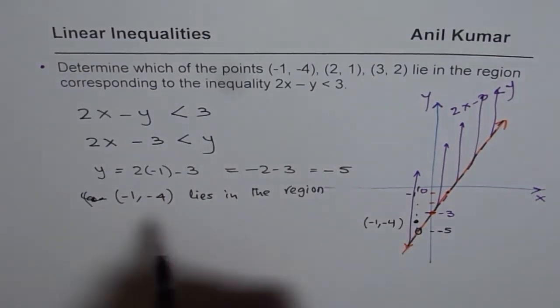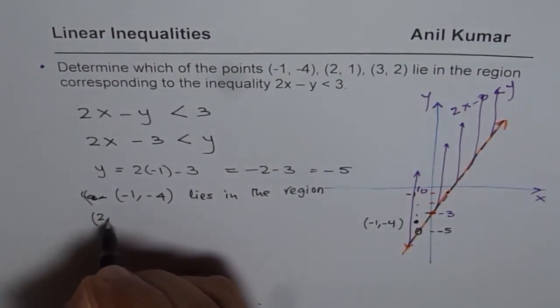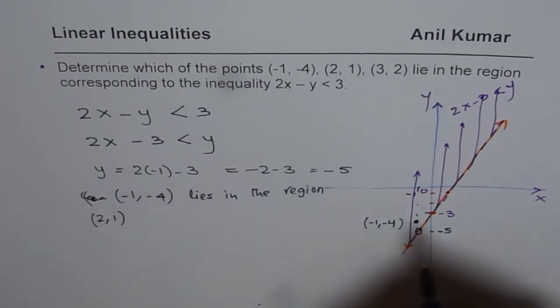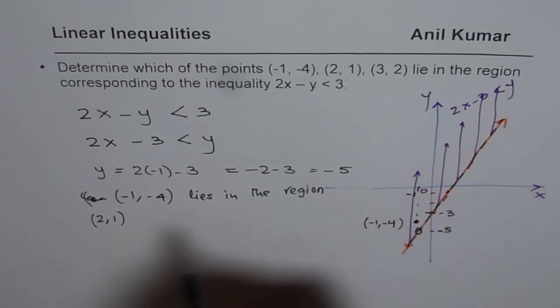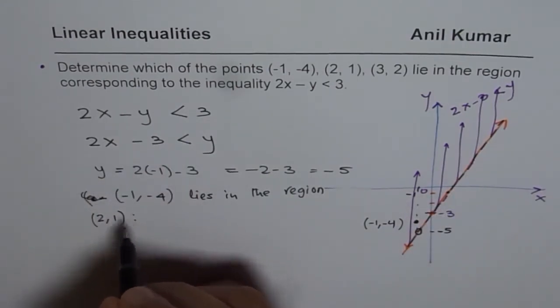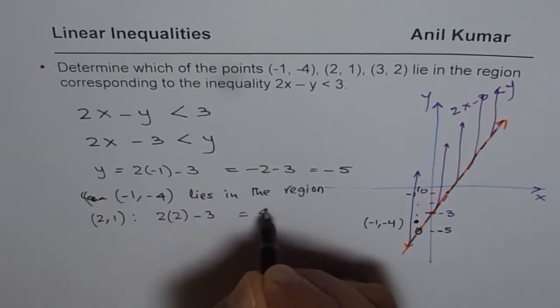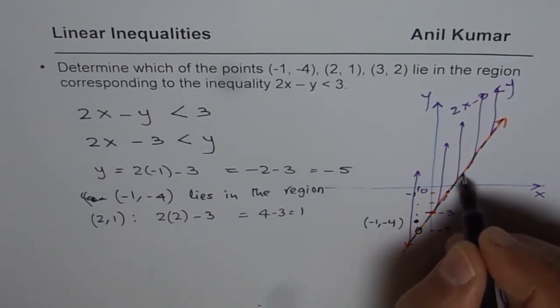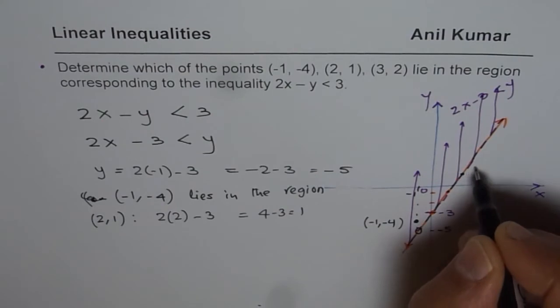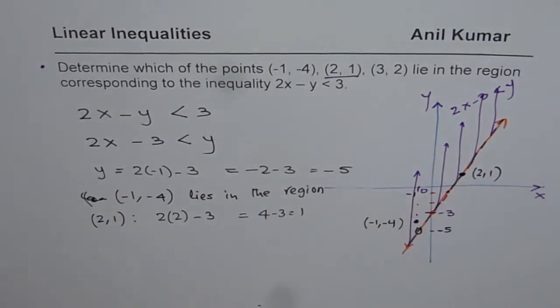Let us test the second point. The second point is (2, 1). So we have 2 and 1 as a point. At x = 2, what is the point on the line? Let us test that. We will substitute 2 here. So, we get 2 times 2 minus 3, that is 4 - 3 and that is 1. So at x = 2, we expect a value of 1. Assume this to be (2, 1). So (2, 1) is a point on the line.